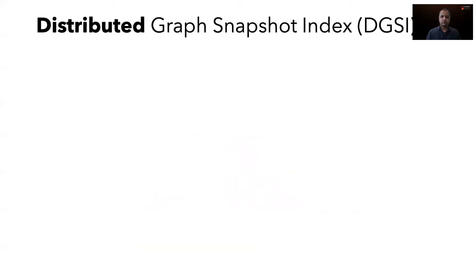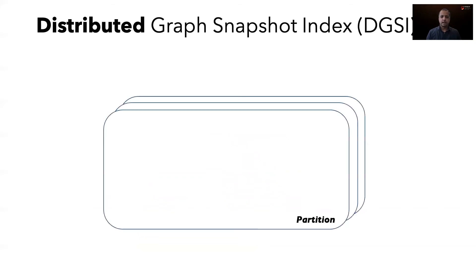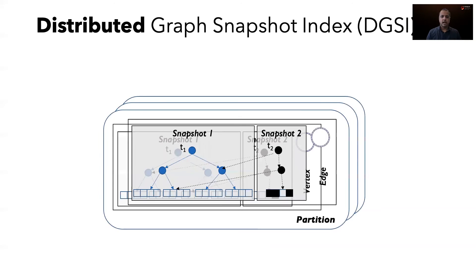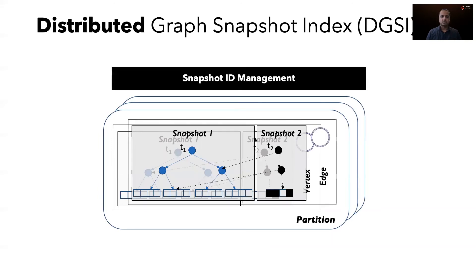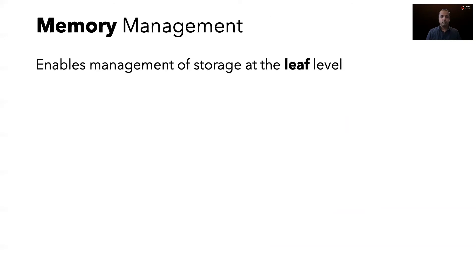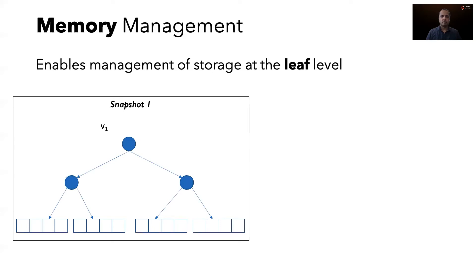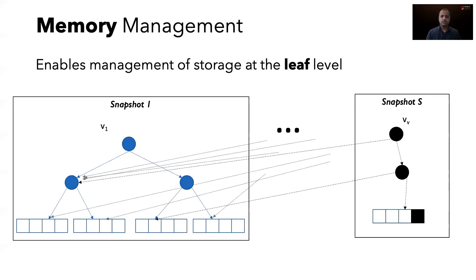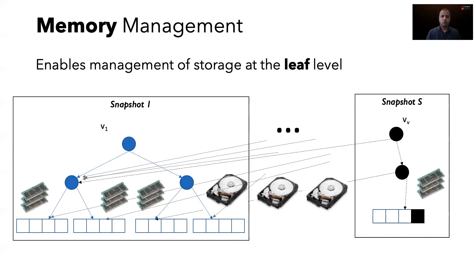To build a graph store, which we call distributed graph snapshot index, Tegra partitions the graph in the cluster. In each partition, it creates two parts, one for storing vertices and one for edges. The system enables access to snapshots in a consistent manner. Over time, DGSI accumulates snapshots. The user may start with snapshot i and at some point be working with snapshot s. There may be a large number of snapshots between i and s. Storing all these in memory is problematic. The design of DGSI allows us to store each leaf in the snapshot independently. Thus, we only require the leaves that are part of the active snapshots to be in memory. For instance, if snapshot s is the only active snapshot, then we can store all other leaves on disk.